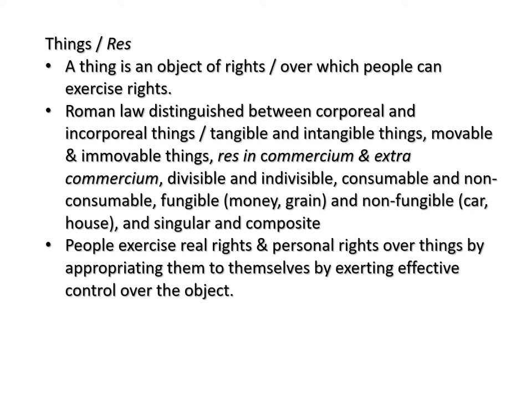Romans also classified property in terms of movables and immovables. For instance, livestock and animals like cattle and horses would be movable things, whilst land and houses were regarded as immovable things.